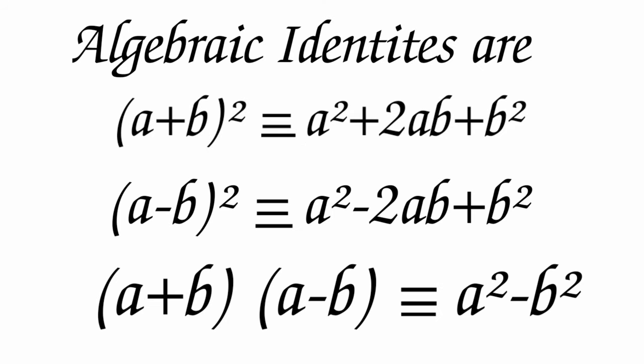Now let us find factors using identities. The algebraic identities are: (a + b)² = a² + 2ab + b², (a - b)² = a² - 2ab + b², and (a + b)(a - b) = a² - b².